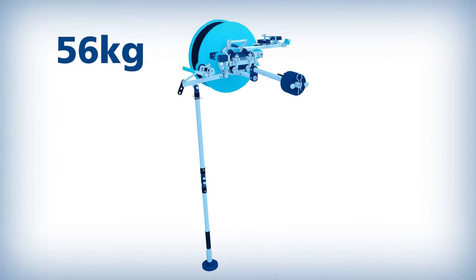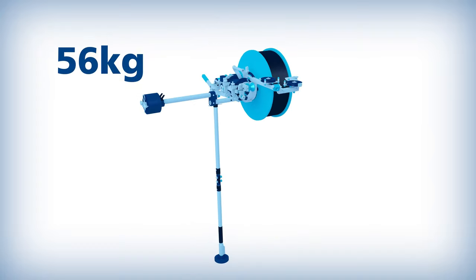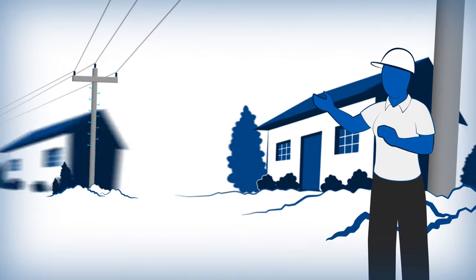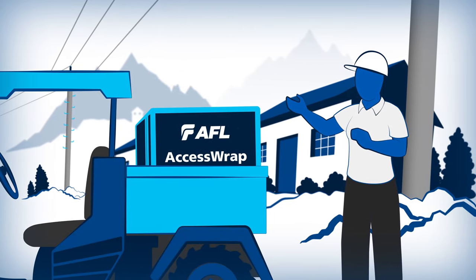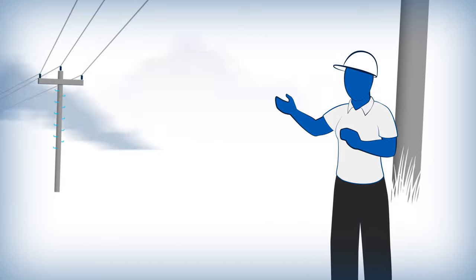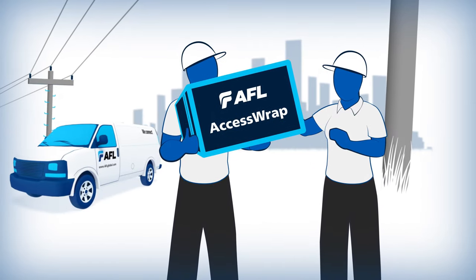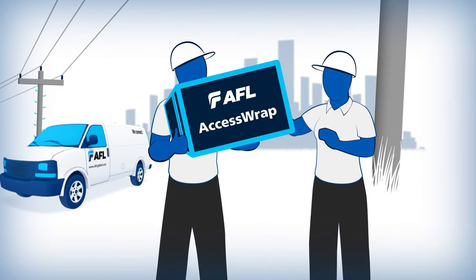The AccessWrap solution is small and lightweight, allowing access to remote or hard-to-reach locations, as well as removing the need for heavy installation equipment. This makes it an ideal solution for both rural and urban areas where access or available space can be limited.